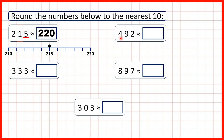Now we have 492. Again, we can circle our tens digit and underline the digit to the right — our ones digit. Remember, 5 or more we round up, but 4 or less we round down, and we have a 2, so we're rounding down. That means the digit we've circled stays the same, so we have 490.